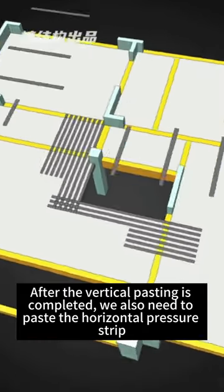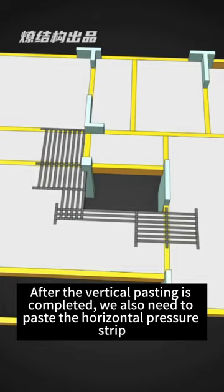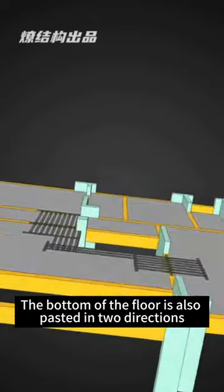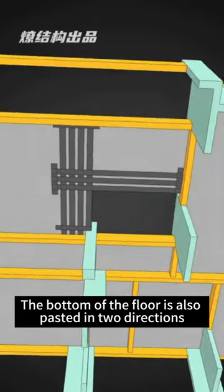After the vertical pasting is completed, we also need to paste the horizontal pressure strip. The bottom of the floor is also pasted in two directions.